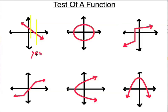It only fails the vertical line test if the vertical line passes through more than one point. Looking at this second graph, I can draw a vertical line here and make it pass through more than one point — passing through a point right here and right here. I could do that just about anywhere on this oval shape. If I can draw the line anywhere and make it fail the test, then it fails. So we have to say no, it's not a function.